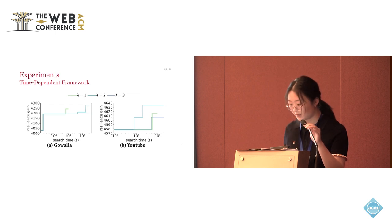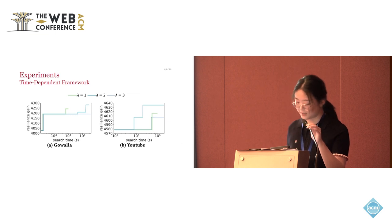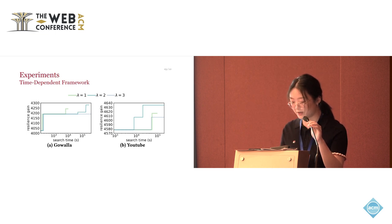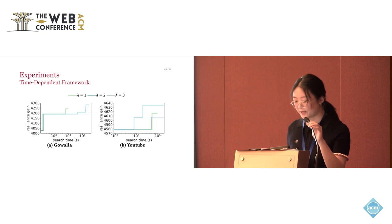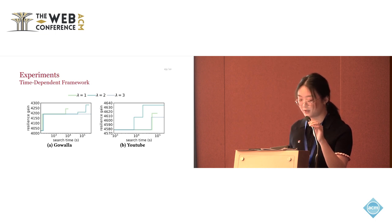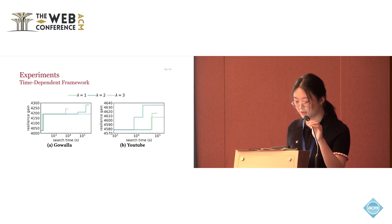This is the results of the experiments of our time dependent framework. We can see that our framework can first quickly output relatively good resilience gain and it continues to search for better solutions. The lambda parameter here is a parameter used in the BNB search framework. That means, for example, if the lambda is equal to 2, that means in the BNB search process, when the depth branch is equal to 2, the search process will terminate immediately.